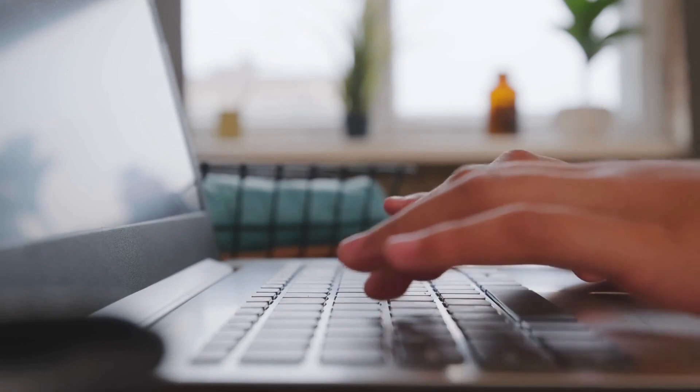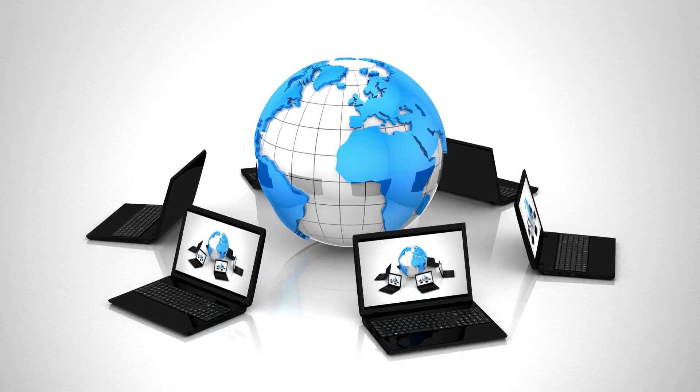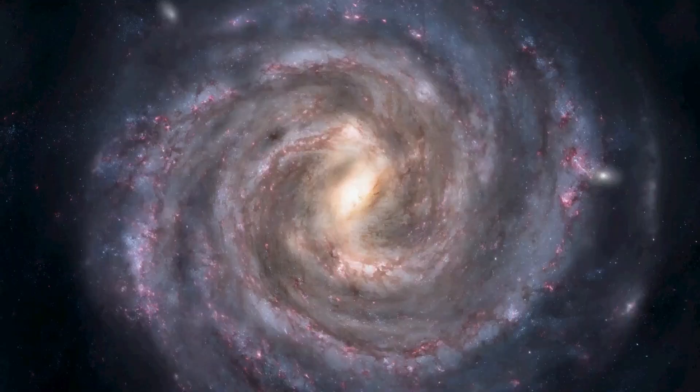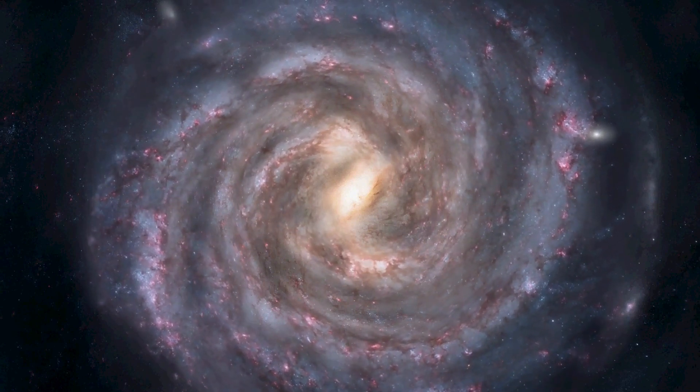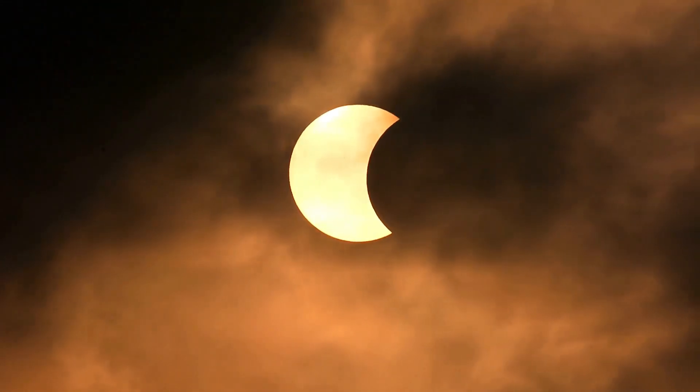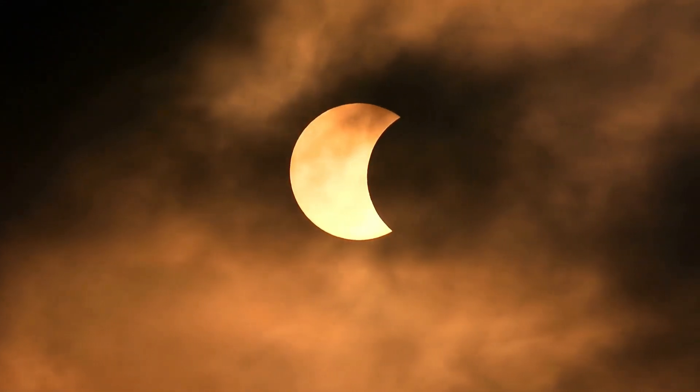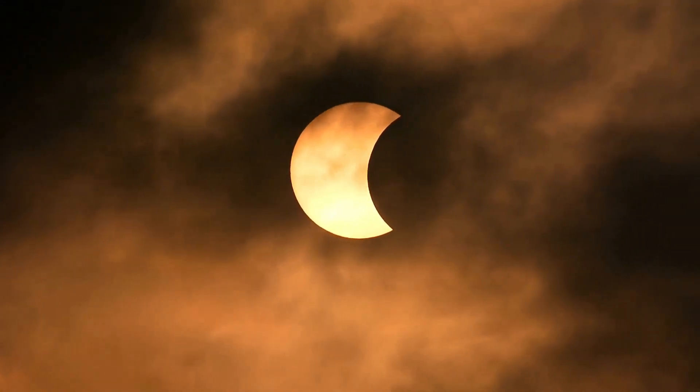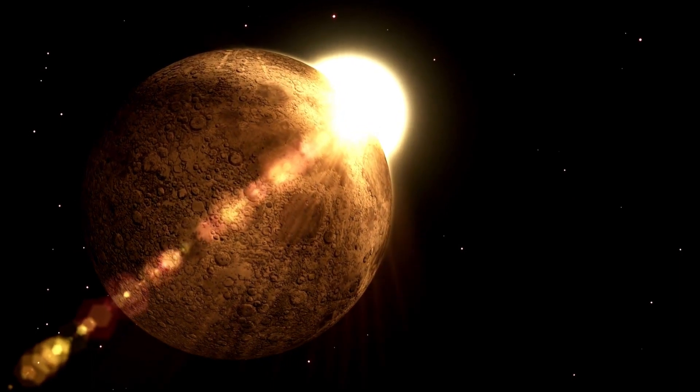Based on some fancy computer models, don't worry, we won't get too technical. Scientists made an educated guess about what was happening. They discovered the debris causing the eclipse must have formed after those two giant planets collided. Think of it as space rubble from the epic collision. Now, here's where things take a real twist.